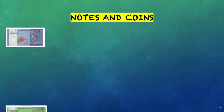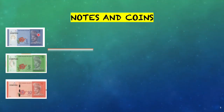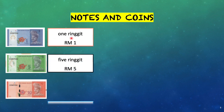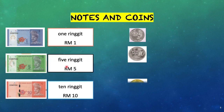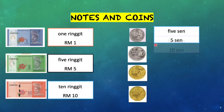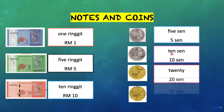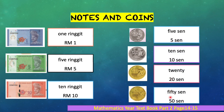Let's repeat again. Notes and coins: the first is one ringgit, five ringgit, ten ringgit, five cents, ten cents, twenty cents, and fifty cents. This is in words. In numerals: RM1 means one ringgit, RM5 means five ringgit, and RM10 means ten ringgit.